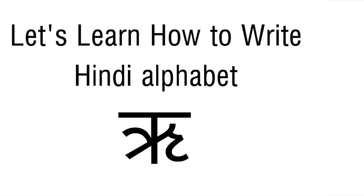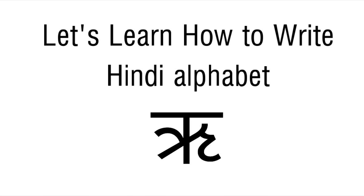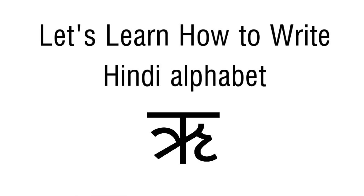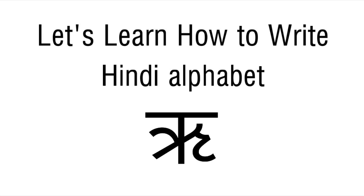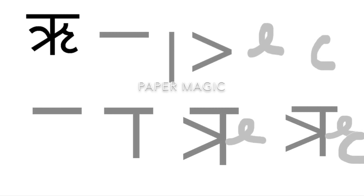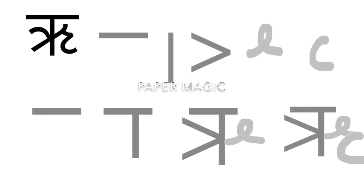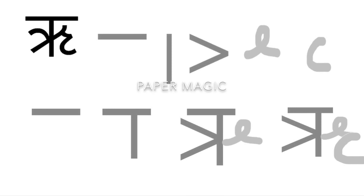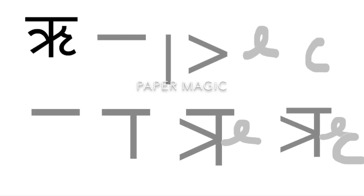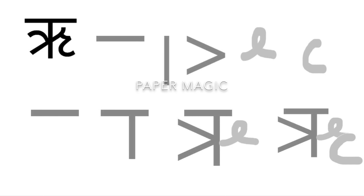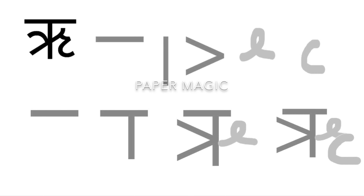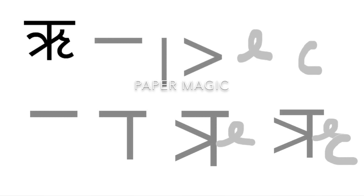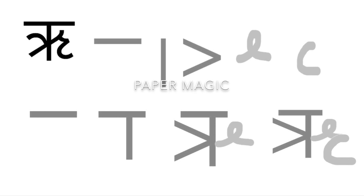Now, let us learn how to write Hindi Alphabet Ri. To write Hindi Alphabet Ri, we will use a sleeping line, a standing line, English capital letter V shape, a loop, and English capital letter C shape.